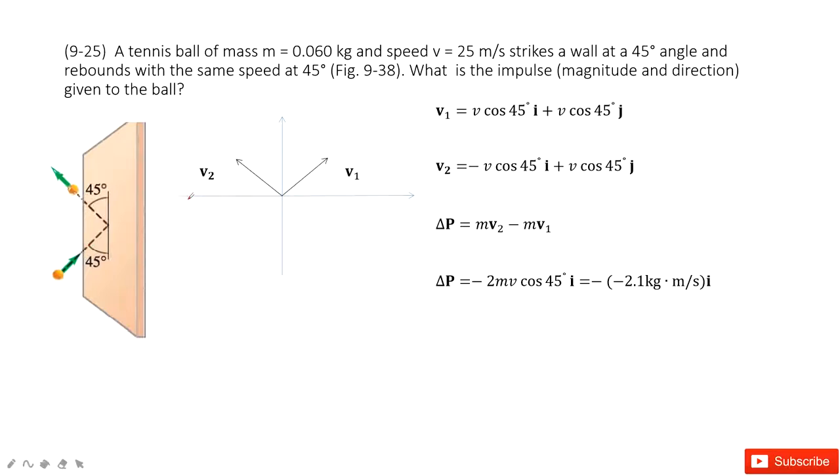We can draw a picture like that. V1 is this vector, V2 is this vector. Now we need to find the change of the momentum. That means mass times V2 minus mass times V1. So we must write V1 and V2 in vector format.